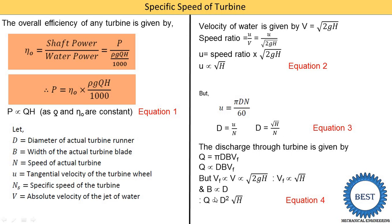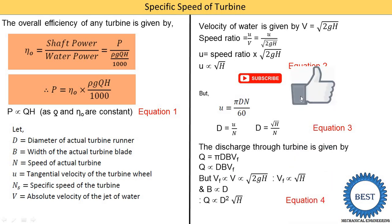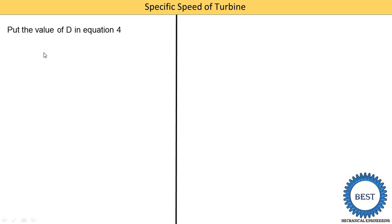Summarizing the derivation so far: starting from Q, we substituted Vf, D, and width, then expressed D in terms of H and N as D proportional to √H / N. Now substituting D into the Q equation: Q is proportional to D² × √H, so replacing D with √H/N gives Q proportional to (H/N²) × √H.